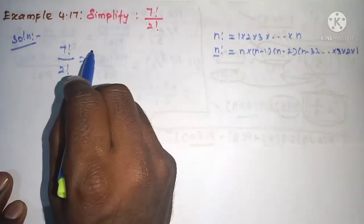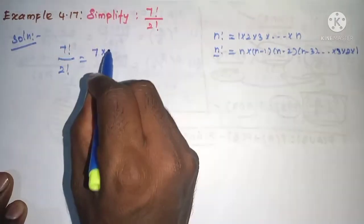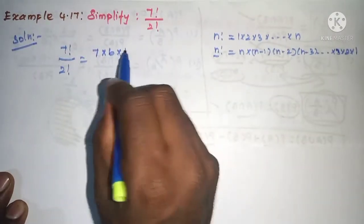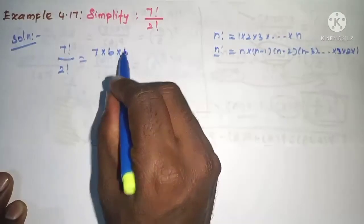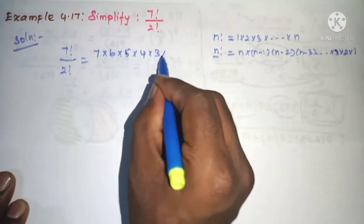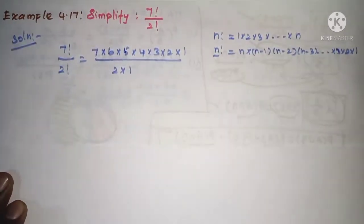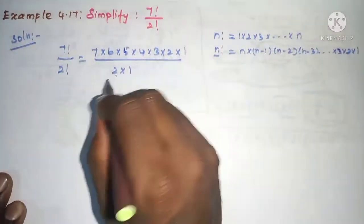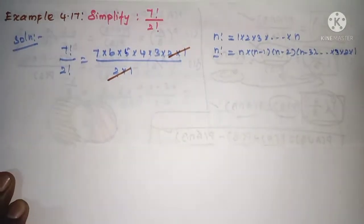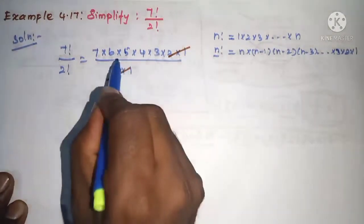So in place of 7, we apply: 7 into 6 into 5 into 4 into 3 into 2 into 1. And 2 factorial is equal to 2 into 1. Okay, so the 2 terms cancel and we can see the remaining.